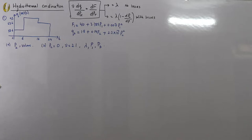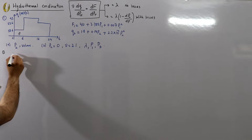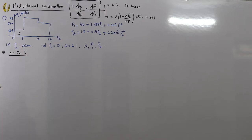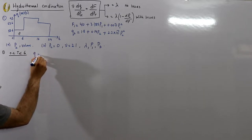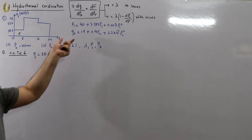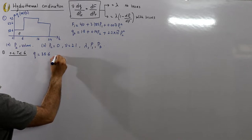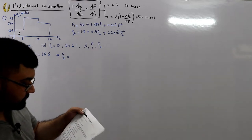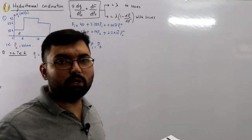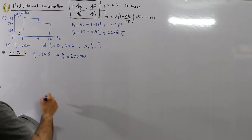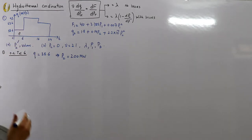For Interval 1 (0 to 6 hours), the discharge is 38.6 million cubic feet per hour. Substituting this into the discharge equation q2 = 1.8 + 0.14·P2 + 2.2×10⁻⁴·P2² gives a quadratic equation in P2. Solving and neglecting the negative root, P2 comes out to be 200 megawatts.